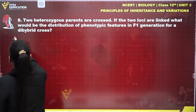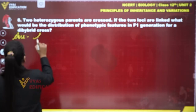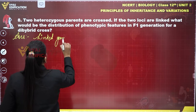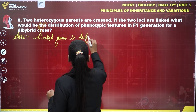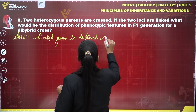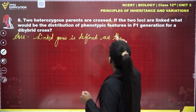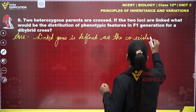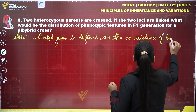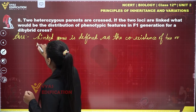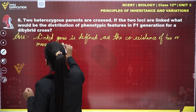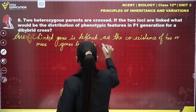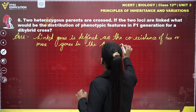So, if we write the answer to question number eight, it would be like this. Linked genes are defined as the co-existence of two or more genes in the same chromosome.